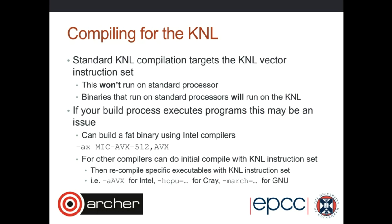There will be separate login nodes for the KNL cluster where you submit jobs to the batch system. That login node will not be accessible from the outside world, so you'll first log into Archer as normal and then SSH into the login node. The exact name of the login nodes hasn't been set yet, but you'll SSH to something like 'knl-login'. In terms of file systems, your home directory will be cross-mounted so you get the same home directories as on Archer. There will also be a new work directory - a scratch workspace on filesystem five, accessible from the KNL nodes and login nodes.